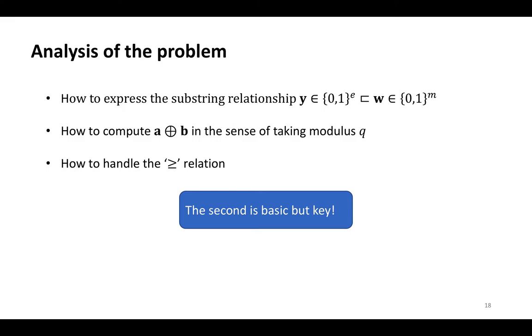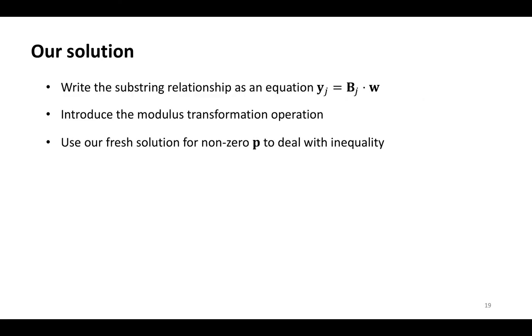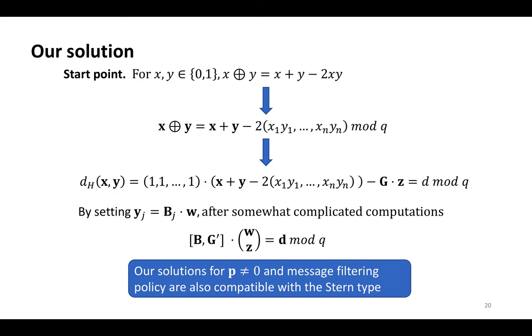The difficulty to this problem is: first, how to express the substring relationship y as a substring of w. Then, how to compute the XOR operation of binary vectors a and b in the sense of taking modulus q. Finally, how to handle the not-less-than relation. We note that the second point is basic but key. Accordingly, our solution is: write the substring relationship as an equation, like yⱼ equal to the product of Bⱼ and w, where Bⱼ is a public matrix. Then utilize the modulus transformation operation. Finally, use our new solution for non-zero p to deal with inequality.